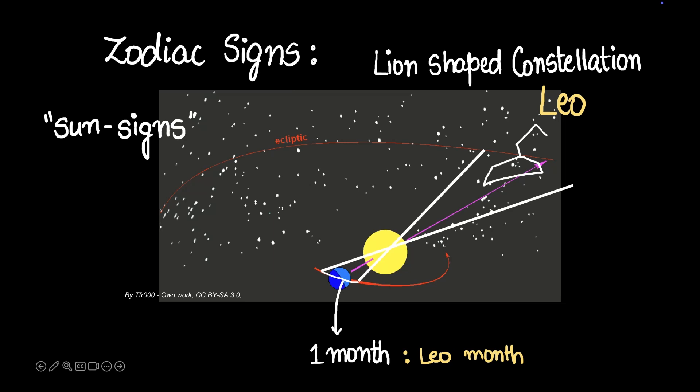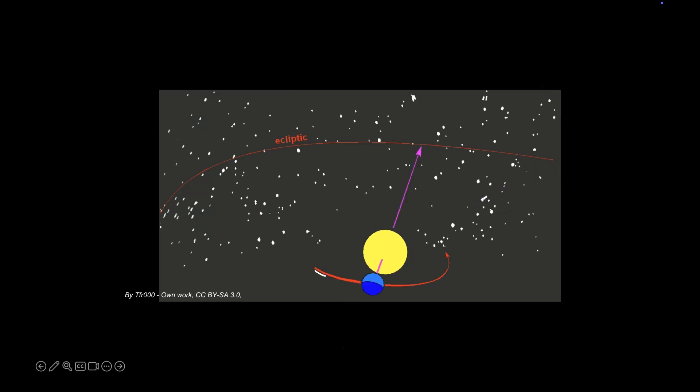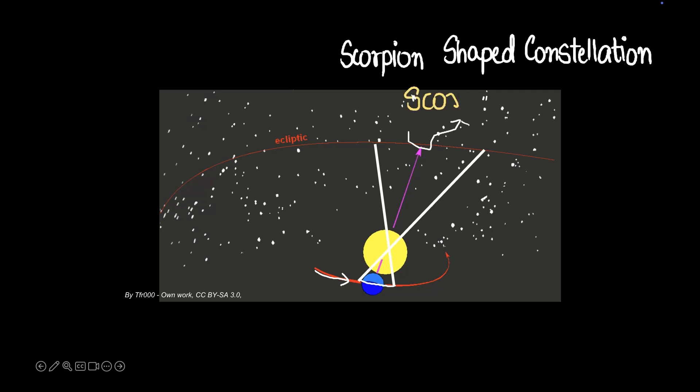Okay, let me give you another example. Let's say after a while the earth has moved a little bit and now for one month the earth is along this portion. Along this portion, right behind the sun, there is some other constellation and this one seems to look like a scorpion, and so we call this constellation Scorpio. So for this entire month on earth, that month is going to be known as the Scorpio month. That's how these sun signs came into place—they were actually months for which a particular constellation was behind the sun.